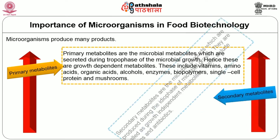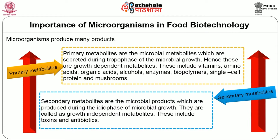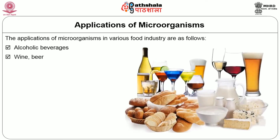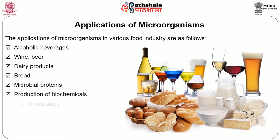Secondary metabolites are the microbial products which are produced during the idiophase of microbial growth. They are called growth-independent metabolites. These include toxins and antibiotics. The applications of microorganisms in various food industries are as follows: alcoholic beverages like wine and beer, dairy products like bread, microbial proteins, and the production of biochemicals namely amino acids, organic acids, vitamins and enzymes.